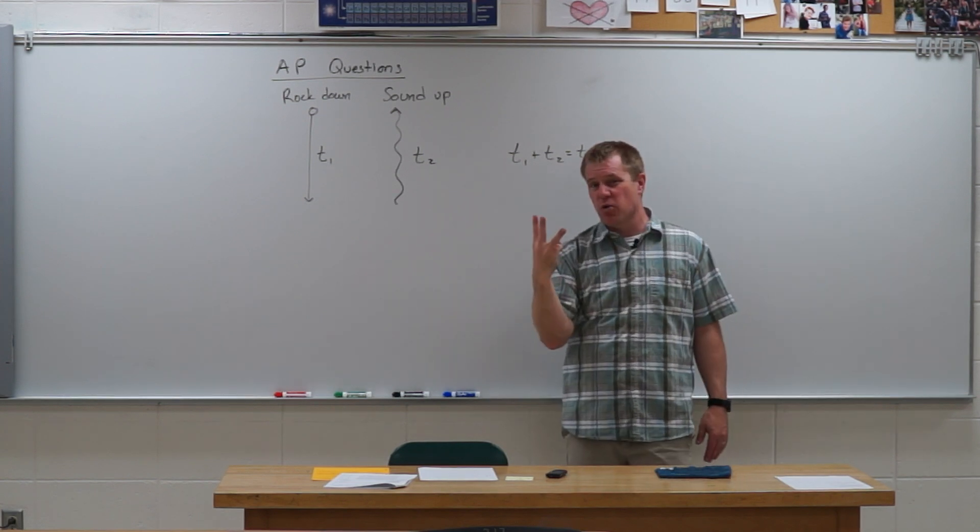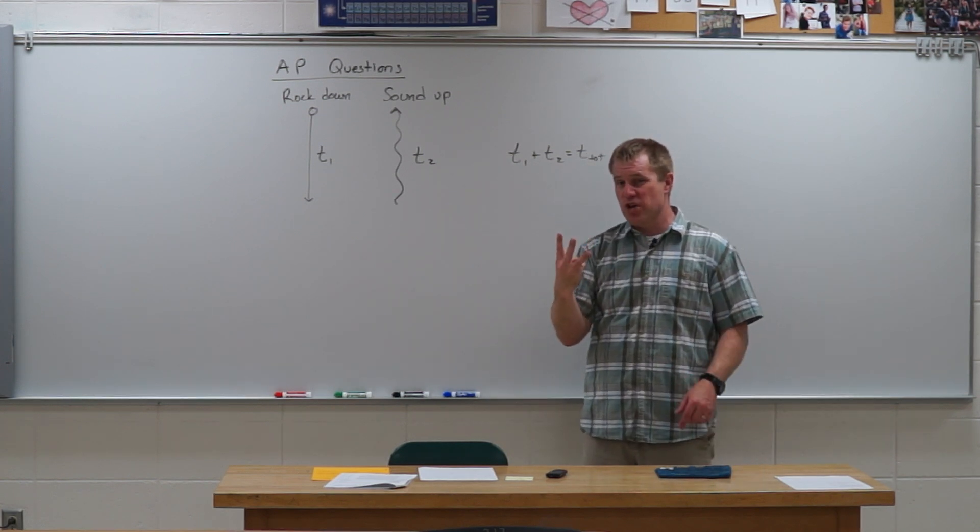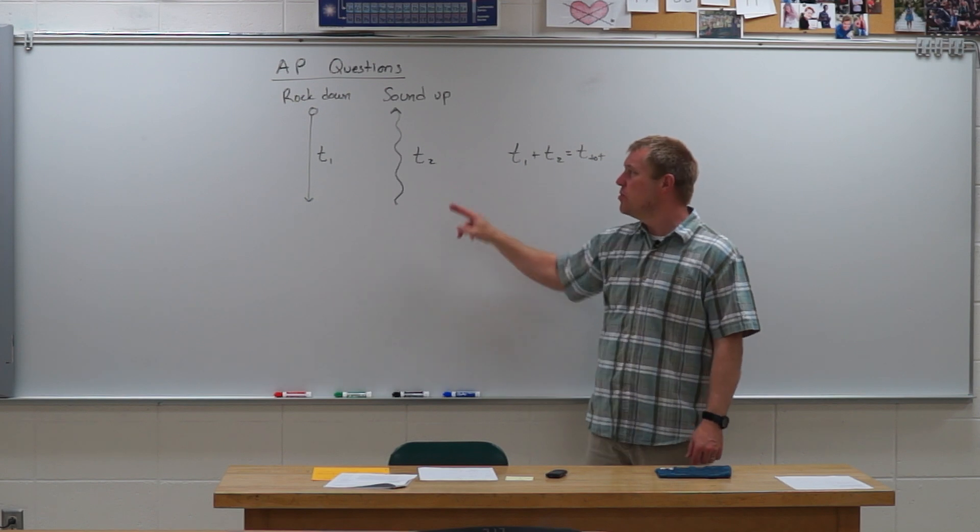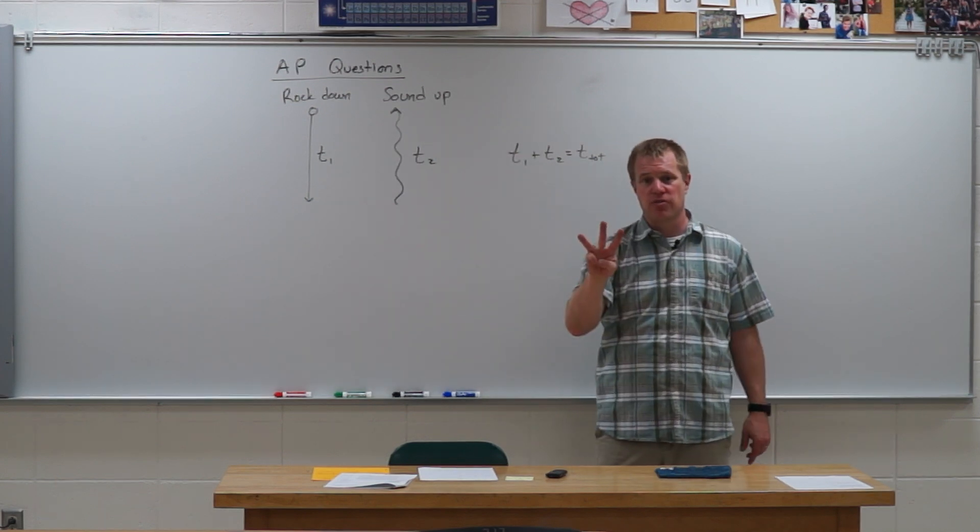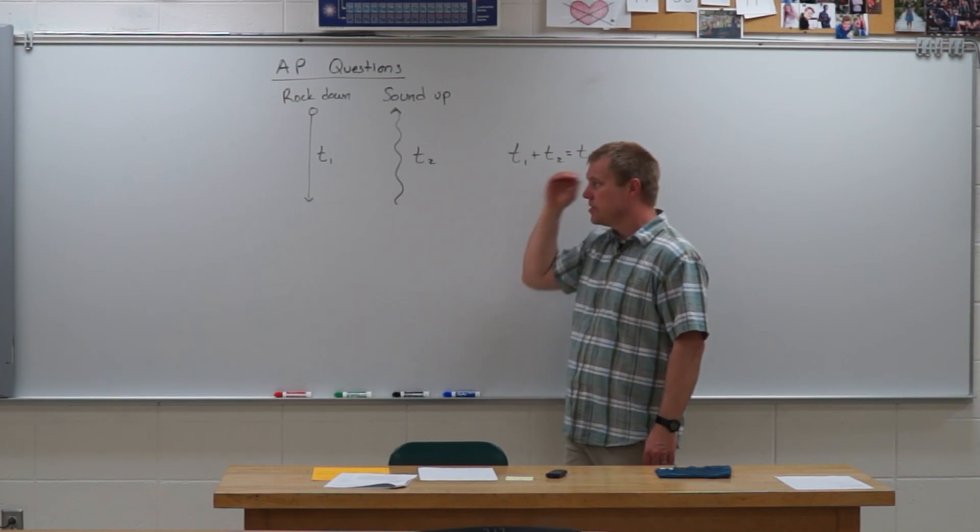So what you're going to do is end up with three equations because you have three unknowns: T1, T2, and the height of the cliff. You're going to need three equations to solve this system of equations.